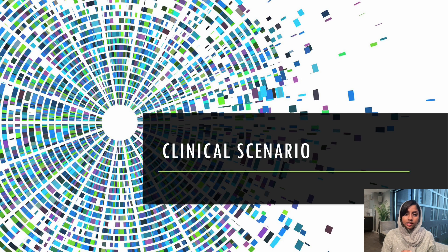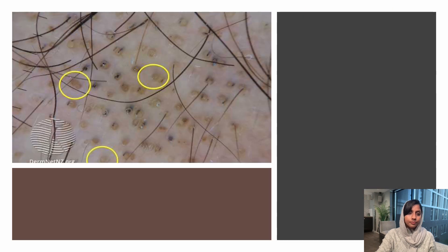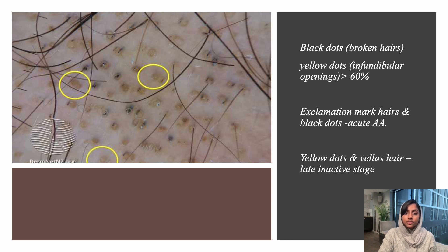That finishes some of the basic structures. Now we will move on to clinical scenarios with specific trichoscopic images. The first scenario: a 10-year-old boy is brought to you with patchy hair loss in the temples. The mother gives a similar history two years ago with spontaneous regrowth of hair. On trichoscopy, you can see yellow dots as well as black dots. This is a typical trichoscopic image of alopecia areata.